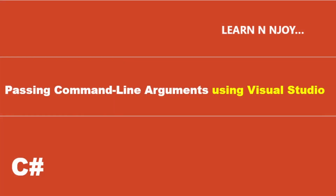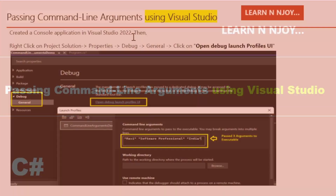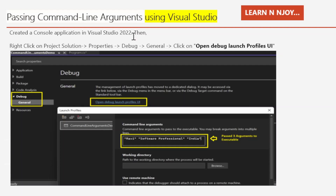Passing command line arguments using Visual Studio. Here we are going to see how to pass command line arguments using Visual Studio. First, I created a console application in Visual Studio 2022, then right-clicked on the project solution, opted Properties, went to Debug, General, and then clicked on Open Debug Launch Profile UI.